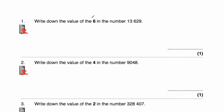So question 1. Question 1 says to write down the value of the digit 6 in the number 13,629. So let's consider our place value columns. We've got our units or our ones, then we've got our tens, our hundreds, our thousands, and our tens of thousands. So the 6 is in the hundreds, so it's going to be 600.